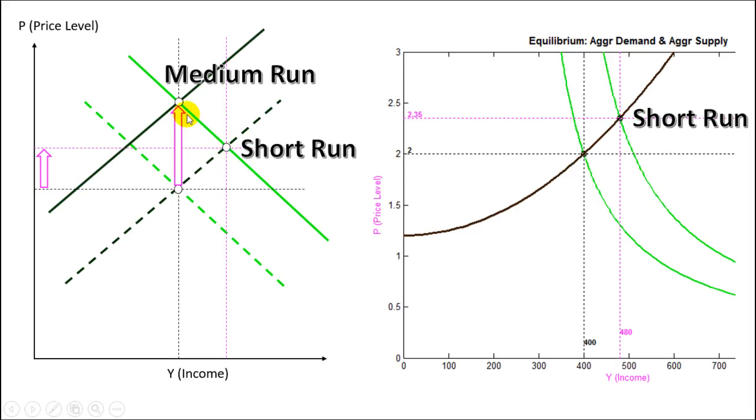But in order to explain and simulate this medium run equilibrium we need to make assumptions and we have to define the concept of natural level of income. And we have to decide if the aggregate supply curve is going to be curved like this or if it is going to be linear like this. So this is the sort of thing that we are going to try to show in the next videos.